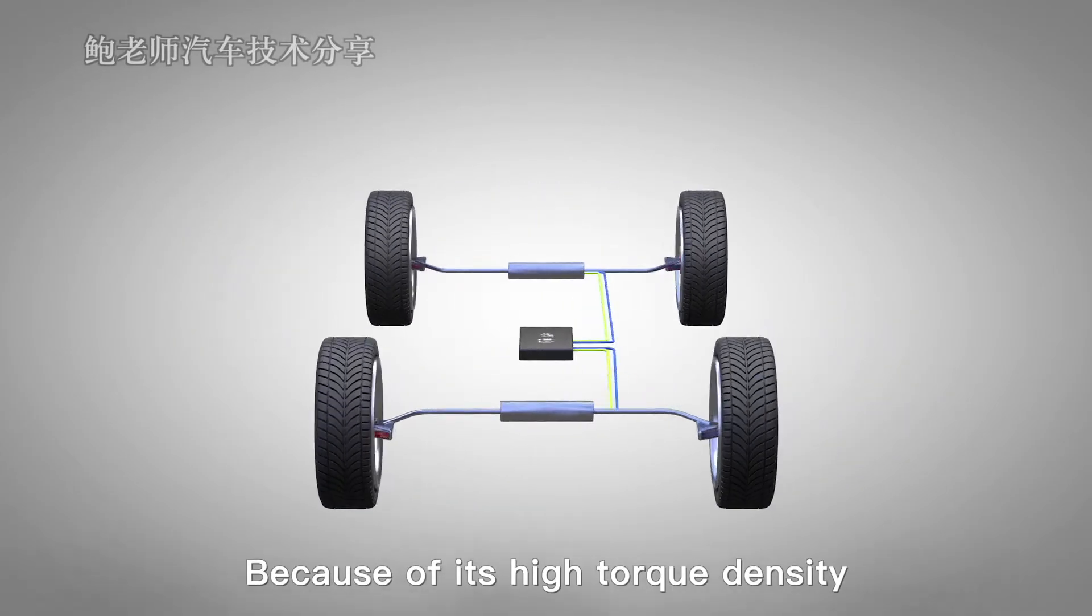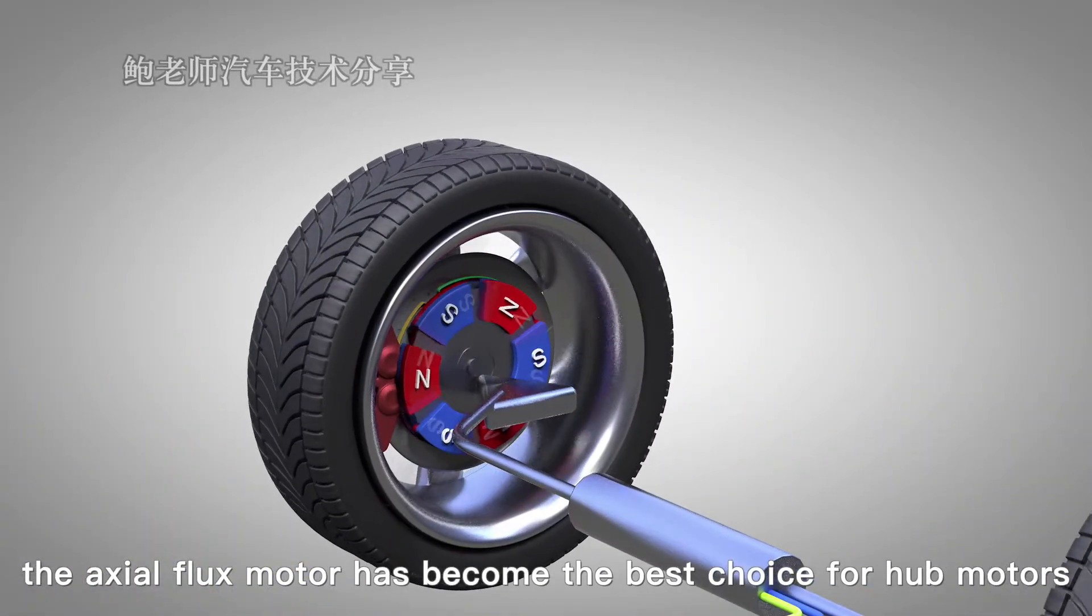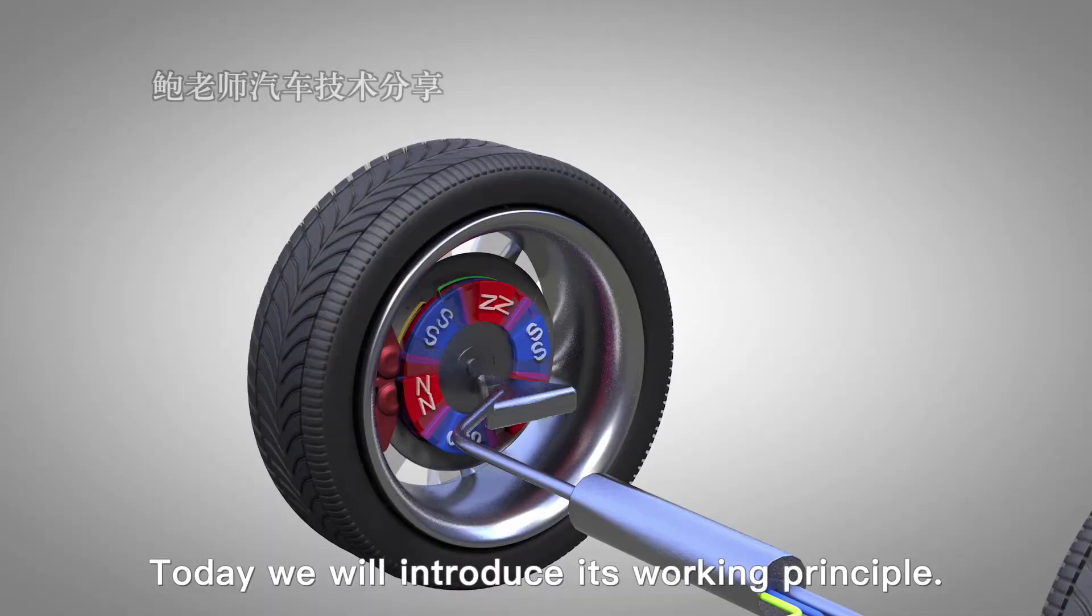Because of its high torque density, the axial flux motor has become the best choice for hub motors. Today we will introduce its working principle.